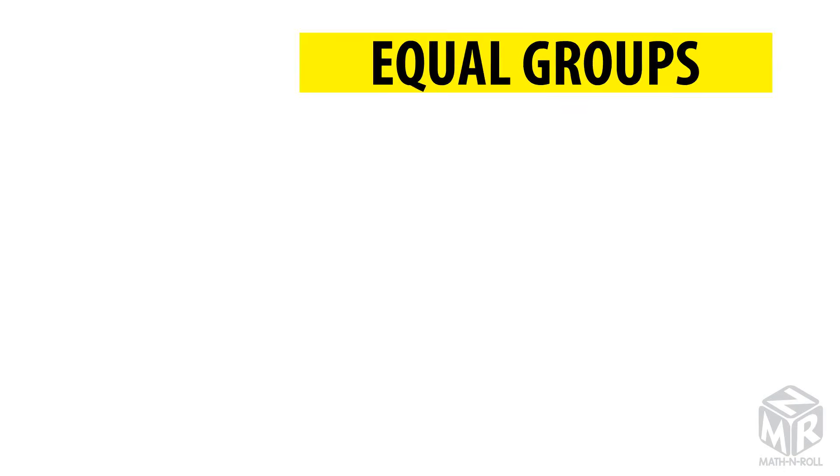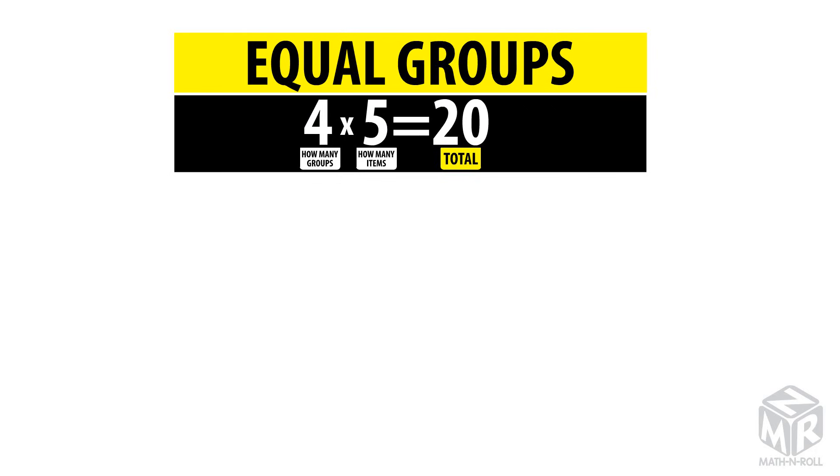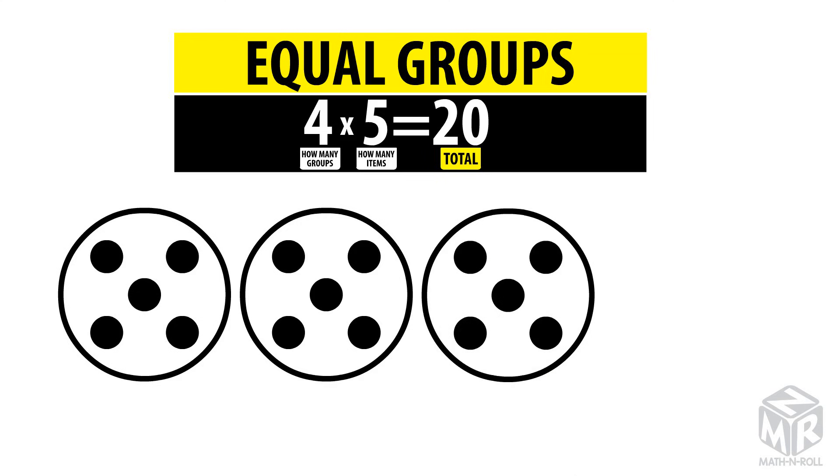Let's try another example. Let's use equal groups to solve four times five. We have four groups with five items in each. So four times five equals 20.